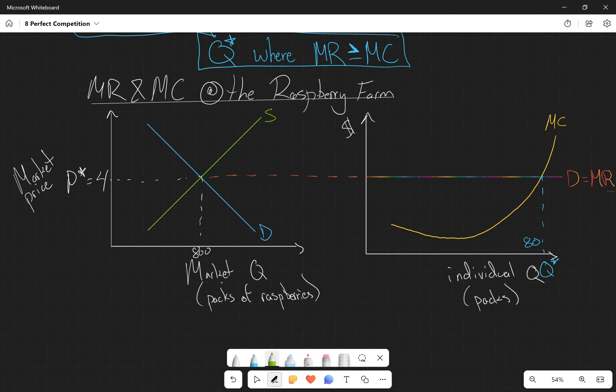Questions on this raspberry farm example and this application of our profit maximizing quantity rule?